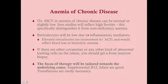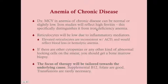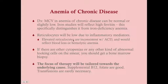Reticulocytes should be low in anemia of chronic disease because inflammatory mediators suppress hematopoiesis. Normal reticulocyte range is approximately 1 to 2.5%; below 1% is always low, above 2.5% is always high. Elevated reticulocytes are inconsistent with anemia of chronic disease — they suggest blood loss or hemolytic anemia, where reticulocyte formation is not suppressed by inflammation.